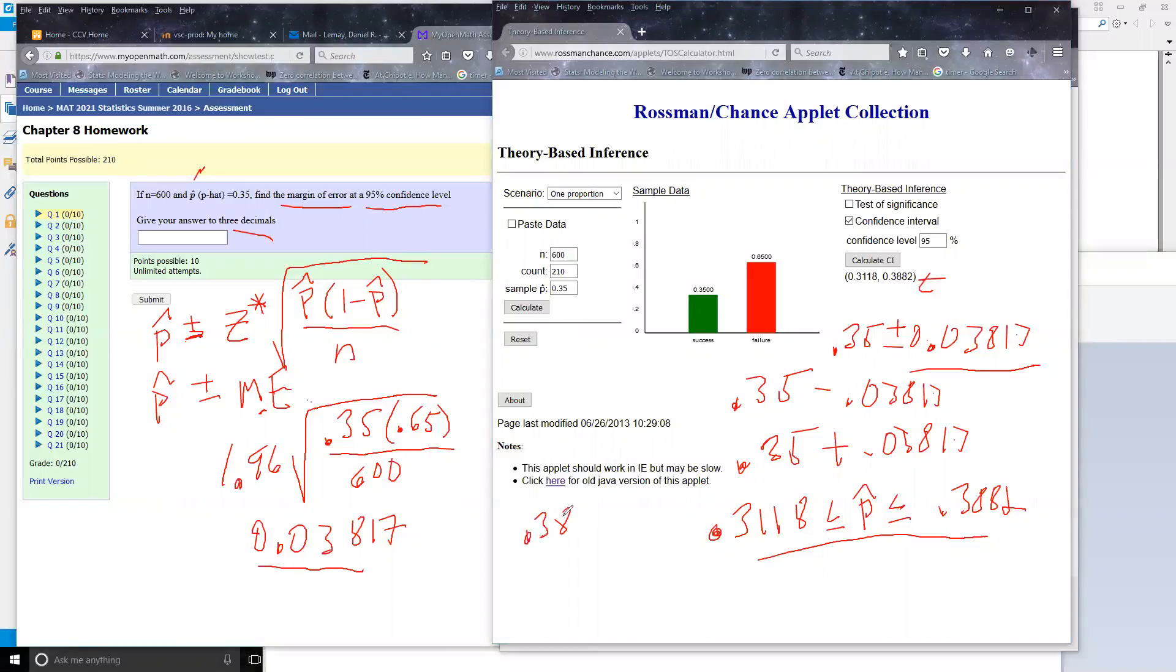So 0.3882 minus 0.3118. And I'll get, that's remember, that's my two margin of errors wide.